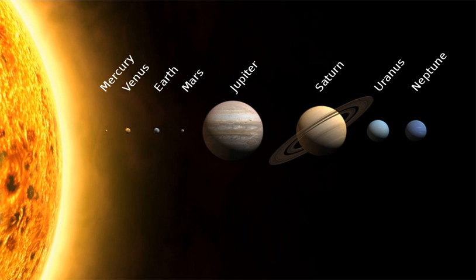Section 6: Inner Solar System. The inner solar system is the region comprising the terrestrial planets and the asteroid belt. Composed mainly of silicates and metals, the objects of the inner solar system are relatively close to the Sun. The radius of this entire region is less than the distance between the orbits of Jupiter and Saturn. This region is also within the frost line, which is a little less than five astronomical units — about 700 million kilometres — from the Sun.